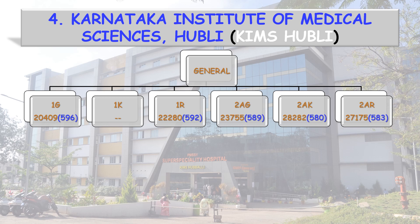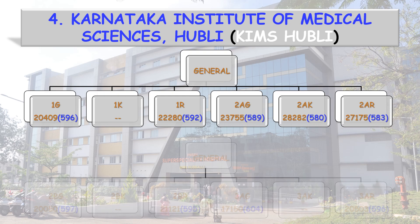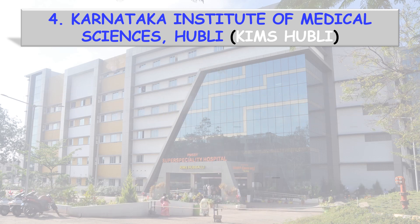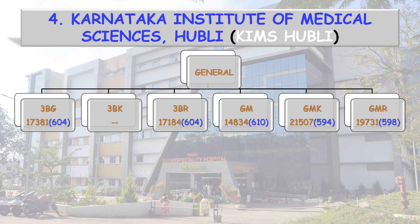Coming to the State Category cutoffs: 1G — All India Rank 20,409, score 596. 1R — score 592. 2AG — 589. 2AK — 580. 2AR — 583. 2BG — 597. 2BR — 595. 3AG — 604. 3AR — 596. 3BG — 604. 3BR — 604.